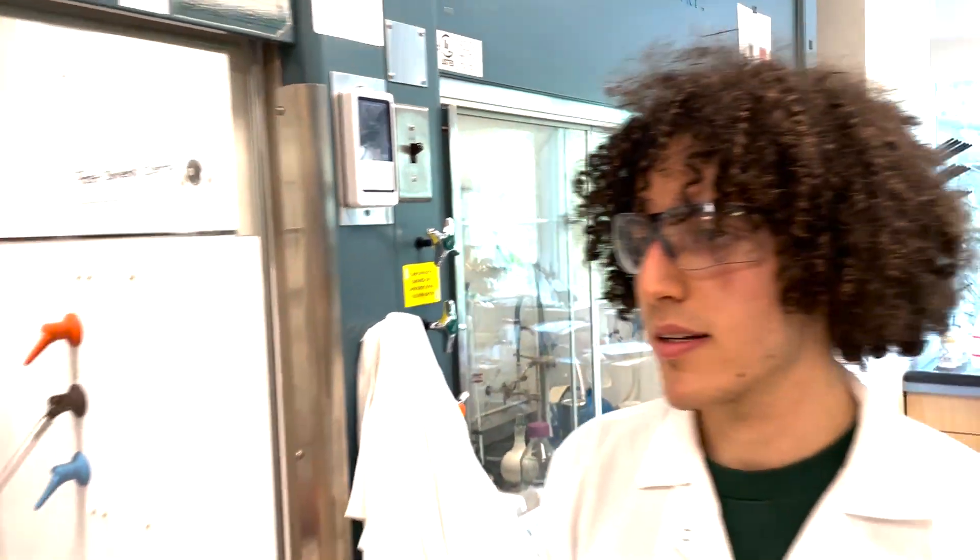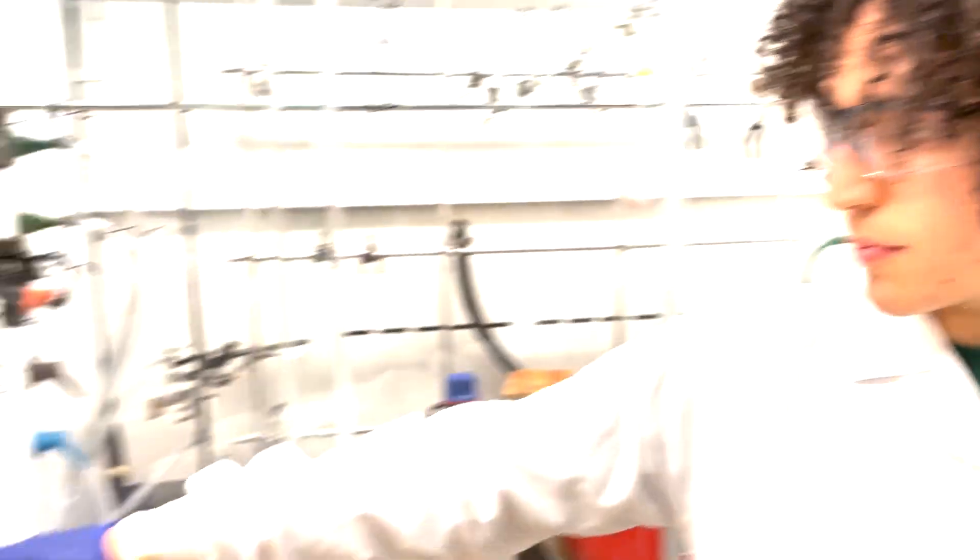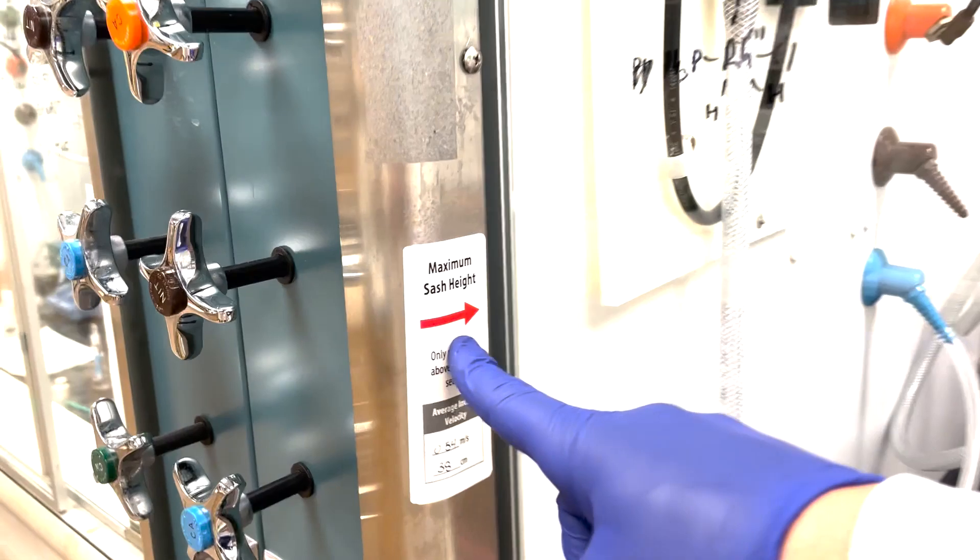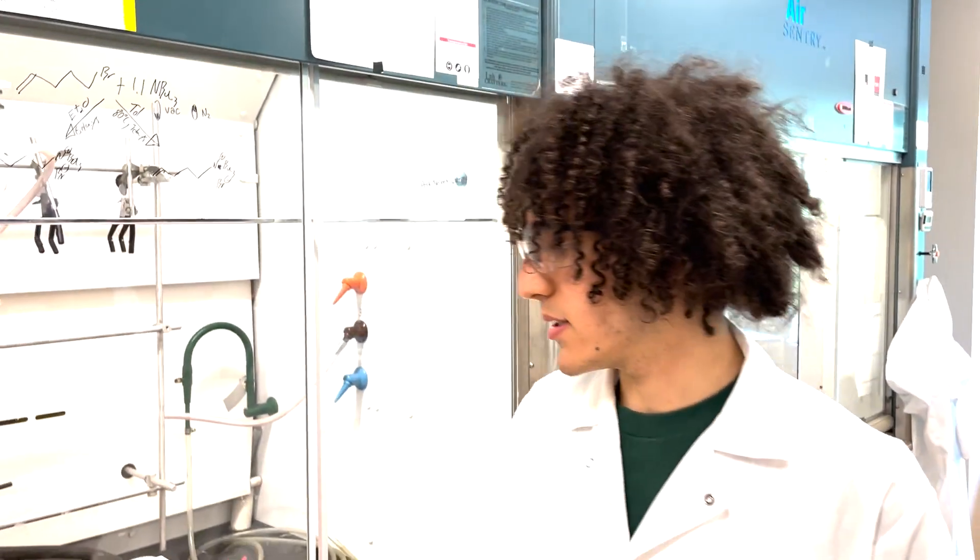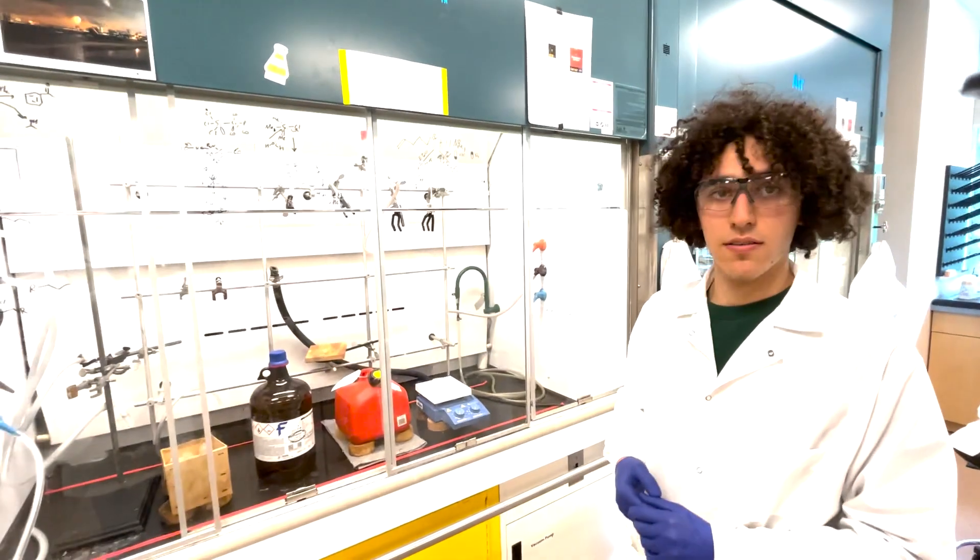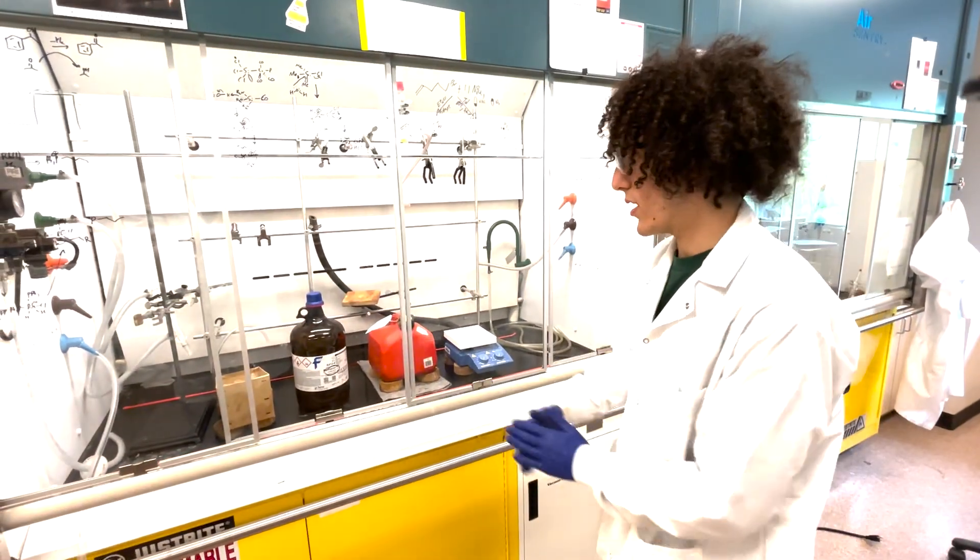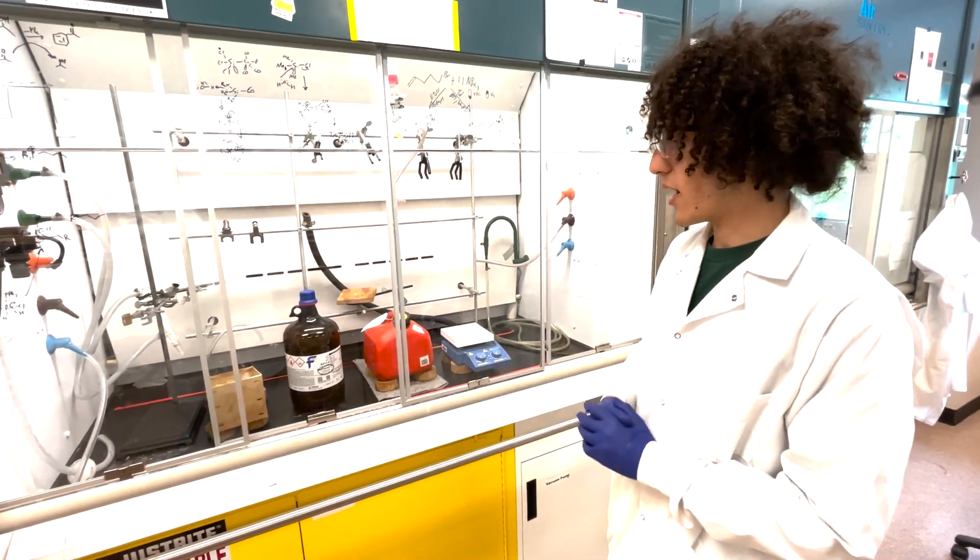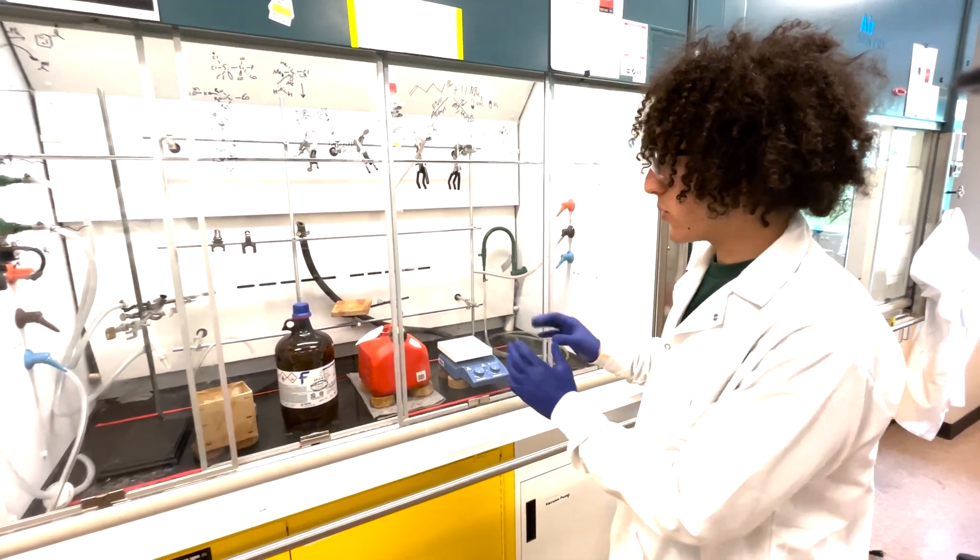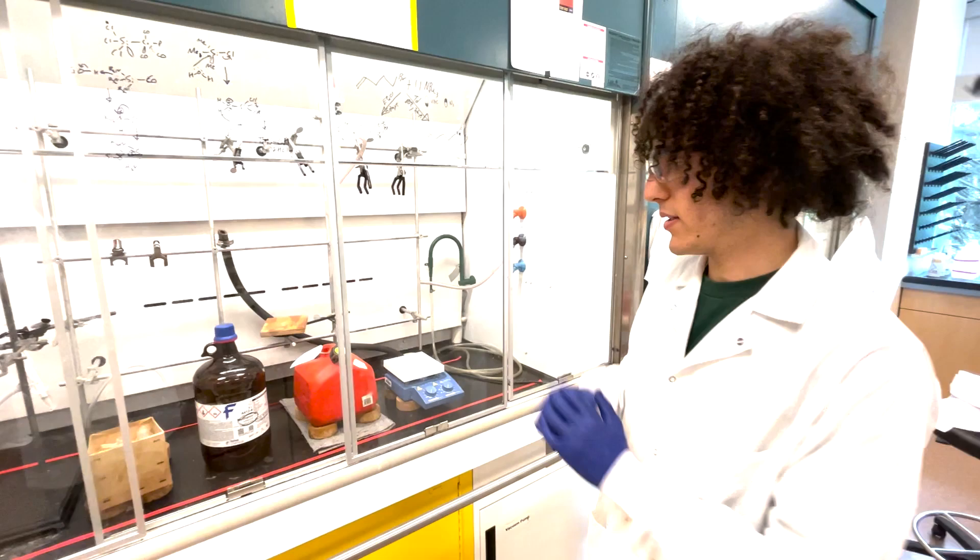When fume hoods are validated, they are indicated with a maximum sash height shown by this arrow. Maximum sash heights are important because the height of the sash impacts the effectiveness of the inward flow of air, or recapturing velocity, and this relates to how well the fume hood controls fumes on the inside of the enclosure.